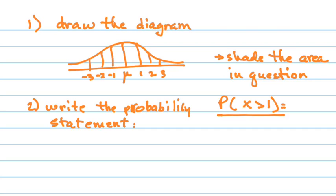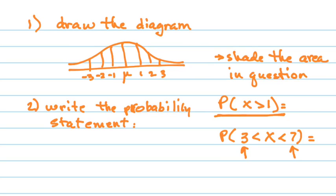The probability statement means writing P of — and then in parentheses what it is you're measuring. This one says the probability that X is greater than 1. You could have the probability that X is bigger than 3 but less than 7, giving you a lower limit of 3 and an upper limit of 7. X is greater than 1 gives a lower limit of 1. So we've been thinking about these numbers as limits, but they are also the numbers you're going to use for your probability statements.